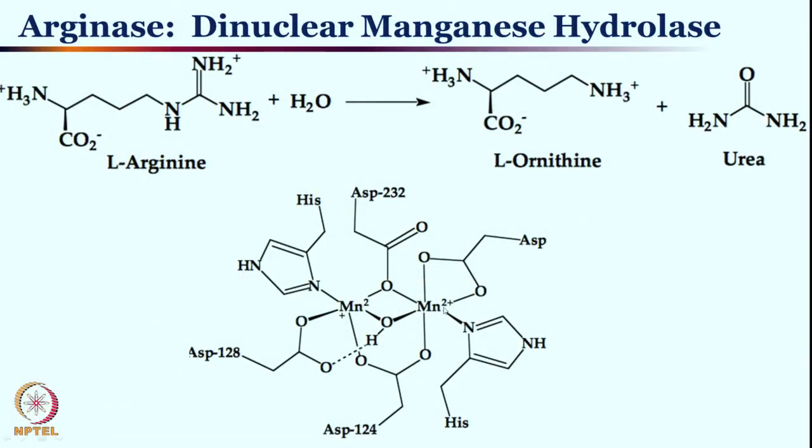Arginase is one of the very important metalloenzymes which converts L-Arginine to L-Ornithine and Urea. It has two metal centers, making it a homometallic species. Two manganese centers are bridged by a carboxylate linkage as well as a hydroxide. There are two types of carboxylate bridges: one is bicoordinated and another is monocoordinated. Both manganese centers are in the plus two oxidation state.